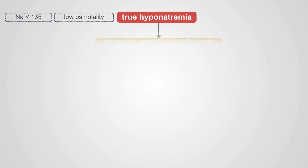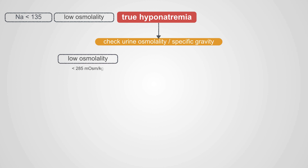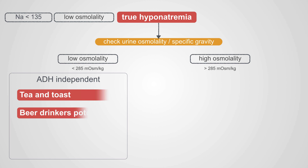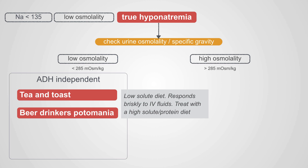Drilling into true hyponatremia, the next step is to check urine osmolality or urine-specific gravity — we're trying to determine ADH activity. Think of urine osmolality as an ADH dipstick. If urine osmolality is low, you have ADH-independent disease: tea and toast syndrome or beer drinkers' potomania. These are due to low-solute diets; they respond briskly to IV fluids, and you treat them with a high-solute or high-protein diet.